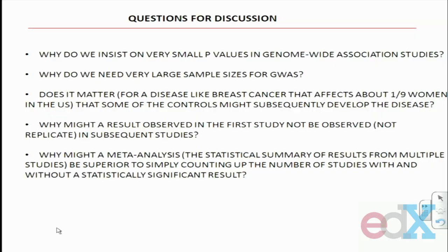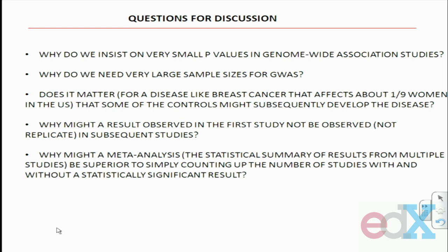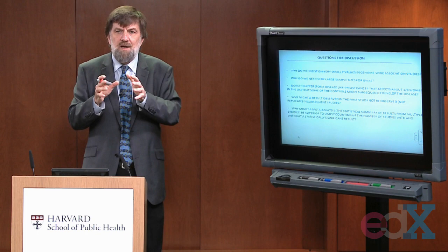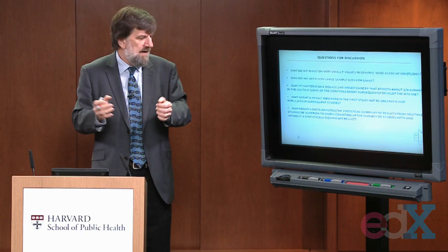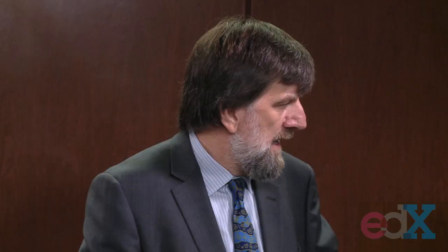Finally, we had four studies — three clearly statistically significant at 0.05, one not. Why might a meta-analysis, which gives a statistical summary of the best estimate across all the data, be superior to simply counting up studies — saying this number were positive, this number were not? What do we get out of a meta-analysis with a single summary point estimate that we don't get from counting positive and null studies? Good luck with the discussion boards, and I'll look forward to seeing you there. Thank you.